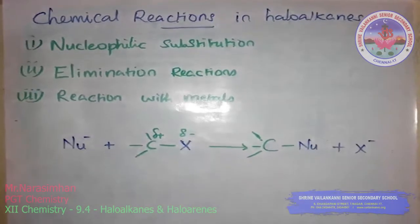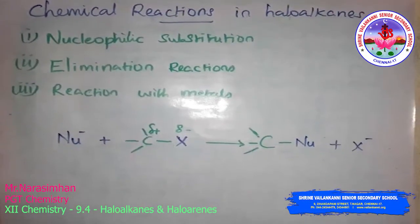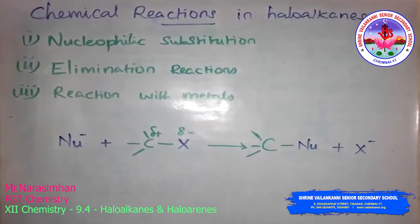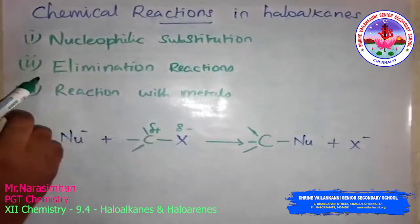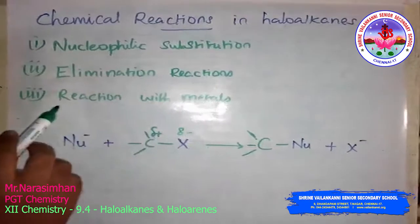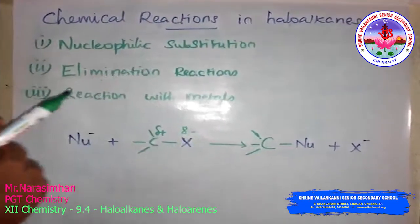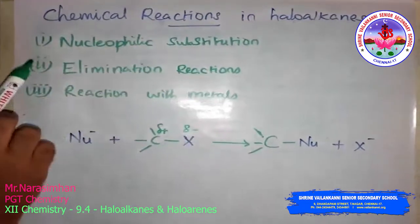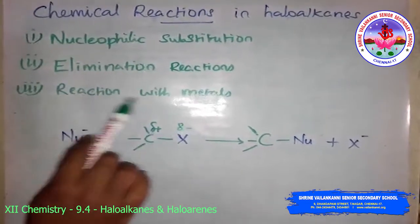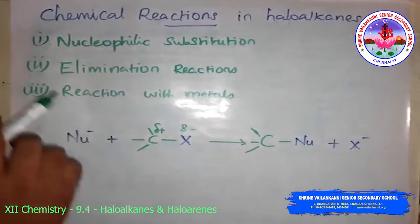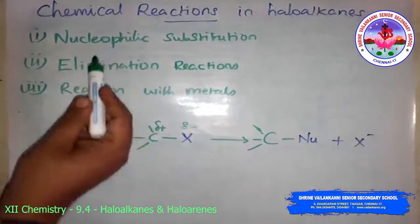Next, the chemical reactions of haloalkanes. Haloalkanes are divided into the following categories: nucleophilic substitution reaction, elimination reaction, and reaction with metals. Already we have seen that haloarines have the same nucleophilic substitution, electrophilic substitution reaction, and reaction with metals. Here the difference is only the elimination reaction. Others are the same.